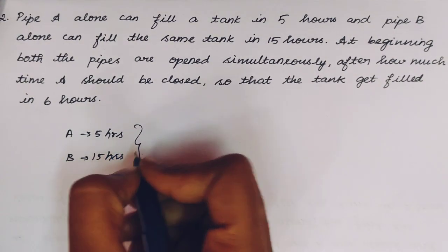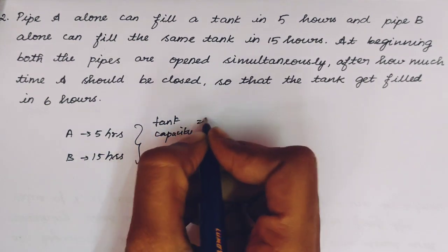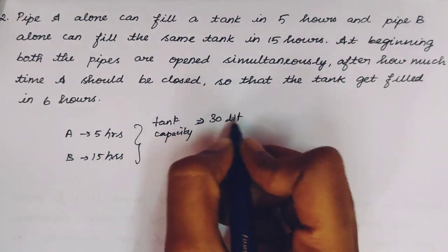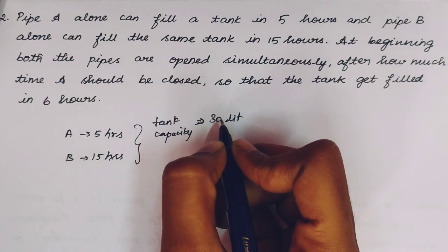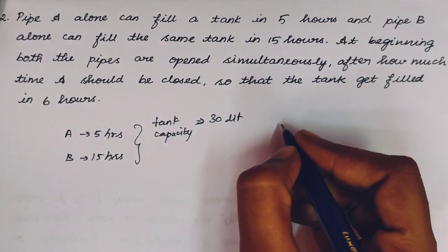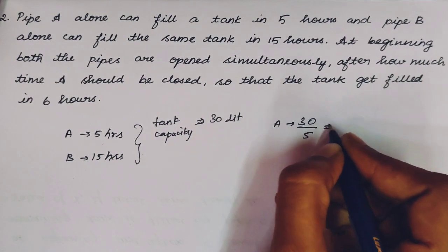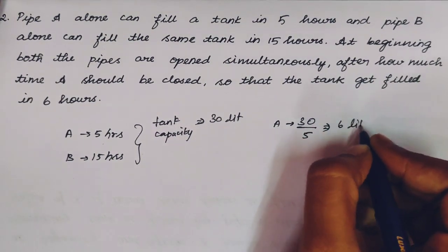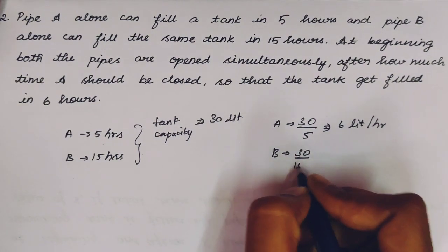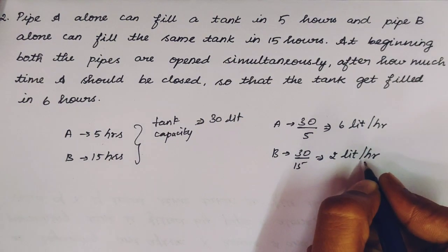Next step, let's find the capacity of the tank. The capacity of the tank is the LCM of 5 and 15, which is 30 liters. A pipe: 30 liters divided by 5 hours equals 6 liters per hour. B pipe: 30 liters divided by 15 hours equals 2 liters per hour. So A fills 6 liters in 1 hour and B fills 2 liters in 1 hour.